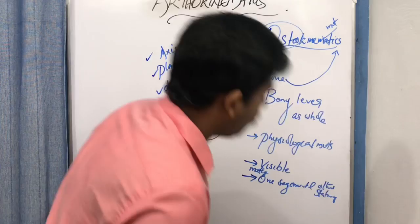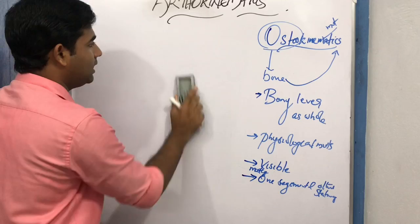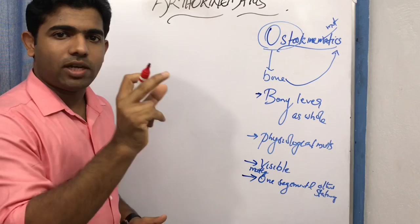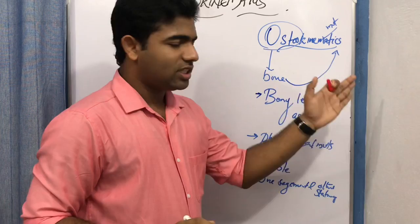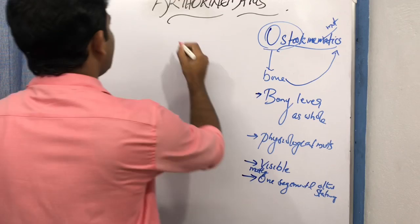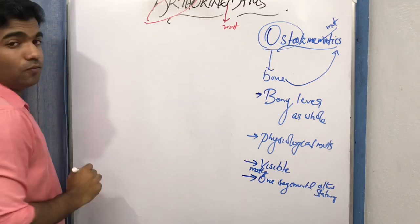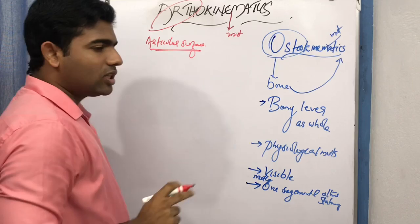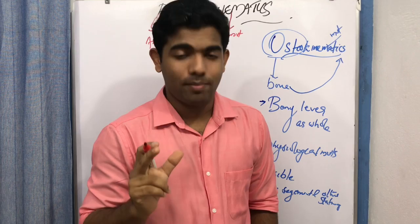Now, what is arthrokinematic movement? Always try to figure out in biomechanics what a term denotes. 'Kinematic' means movement and 'arthro' denotes the articular surface. So arthrokinematic movement is the articular surface movement. While the bone lever as a whole moving is osteokinematic, the movement at the articular surface is arthrokinematic.